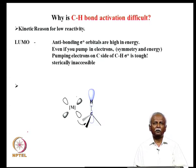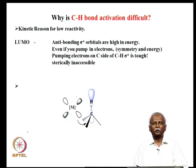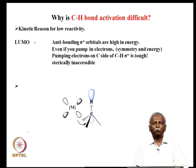The antibonding orbital will have this symmetry and approximate shape. Even if you match the C-H sigma star bond in terms of symmetry and energy, pumping electrons into this MO becomes a difficult task. The metal in fact has got orbitals of the right symmetry, but not often of the right energy. But if the energy is matched, then indeed pumping electrons would be possible.